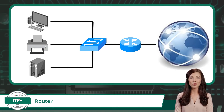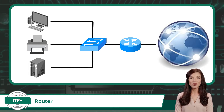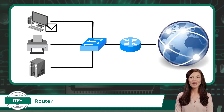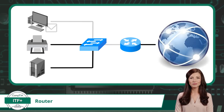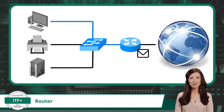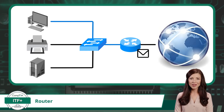But how does a network router actually work? Well, when a device wants to send data to another device in a different network, it compiles a data packet. These data packets will contain a source address and a destination address. The data packet will then seek out the router. The router examines the packet's destination address, much like reading a street sign, and determines the most efficient path for the data to reach its intended destination.